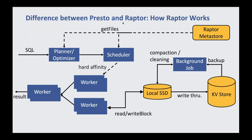In contrast, Raptor works differently. The Presto Raptor connector receives a SQL string, sends it to the optimizer the same way, then asks the file locations from a Raptor metastore, which is a MySQL metastore. All the data is stored co-located with Presto workers rather than in a remote HDFS. So Presto Raptor is not only a compute engine — it is also a storage engine. Once you send the work unit to workers, they not only do the compute but also fetch data from local SSD.